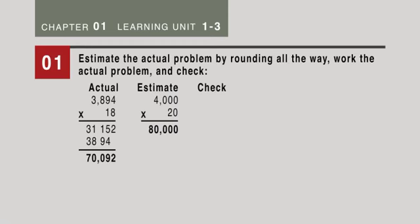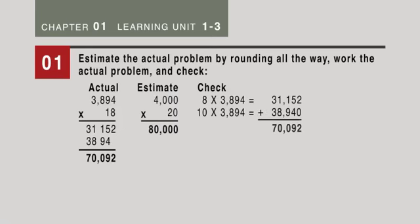Don't forget to put that comma: units, tens, hundreds, thousands, etc. We can check this by going 8 times 3,894 is 31,152, then 10 times 3,894 is 38,940, total 70,092. Remember, the actual is not exactly the estimate.